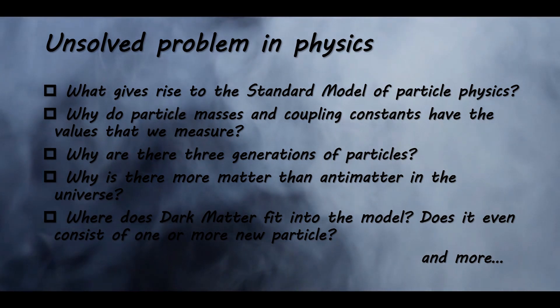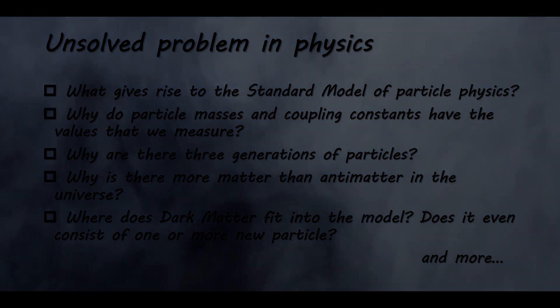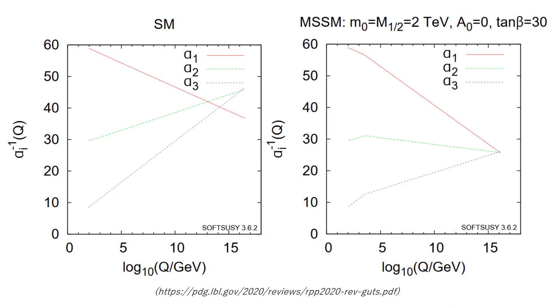The new particles would interact through the same forces as Standard Model particles, but they would have different masses. If supersymmetric particles were included in the Standard Model, the interactions of its three forces—electromagnetism and the strong and weak nuclear forces—could have the exact same strength at very high energies, as in the early universe. A theory that unites the forces mathematically is called a grand unified theory.